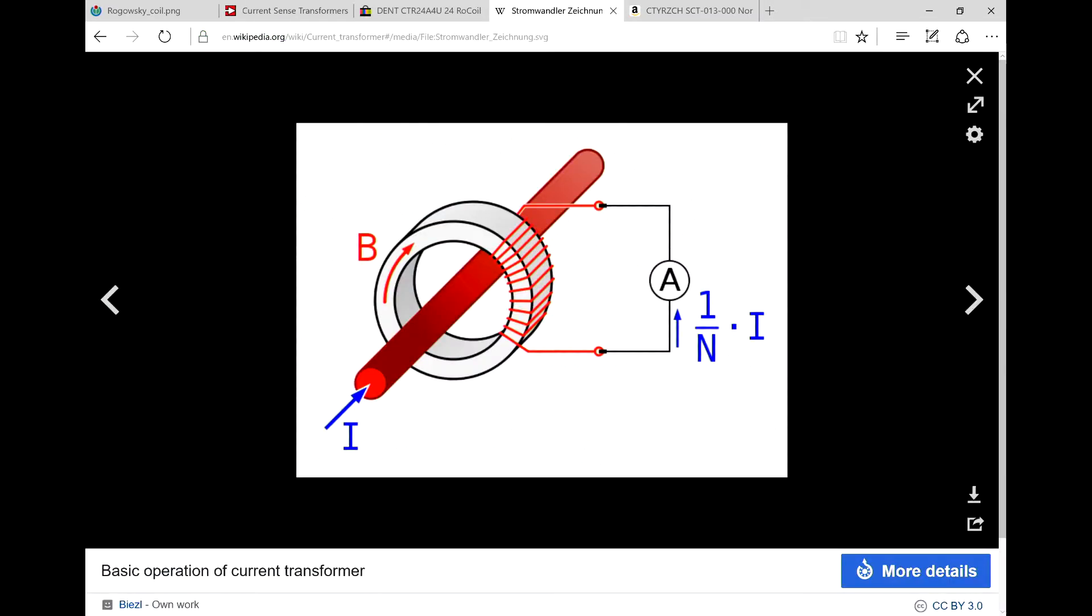Now you can come over here and look at another Wikipedia page. Here you can see the conductor of your piece of equipment, your power flowing through that, saturating or inducing a magnetic field in the toroid here. And then that induces an output voltage here that you can monitor.